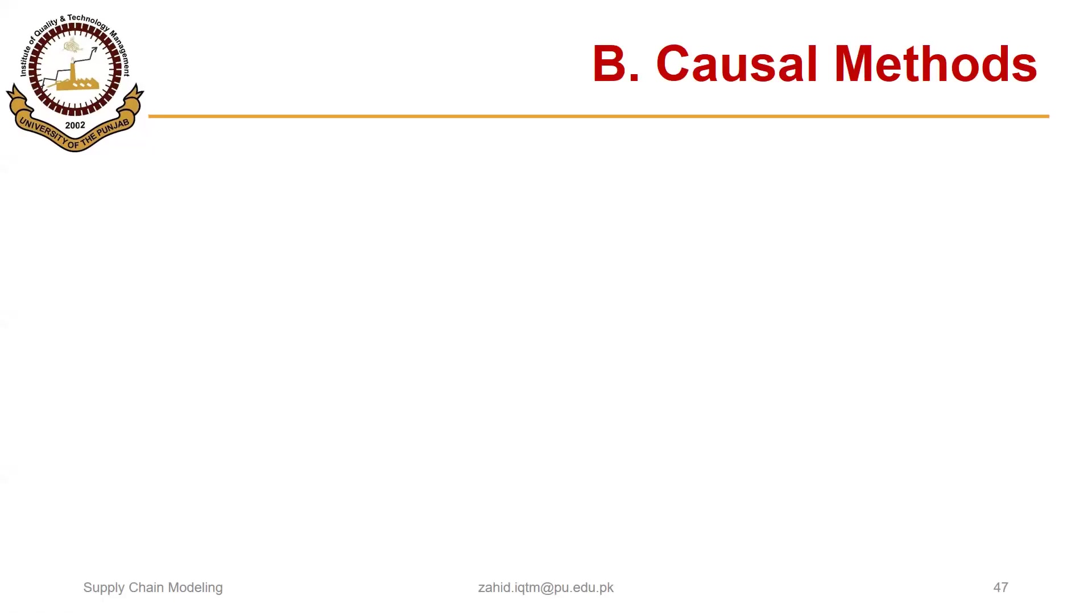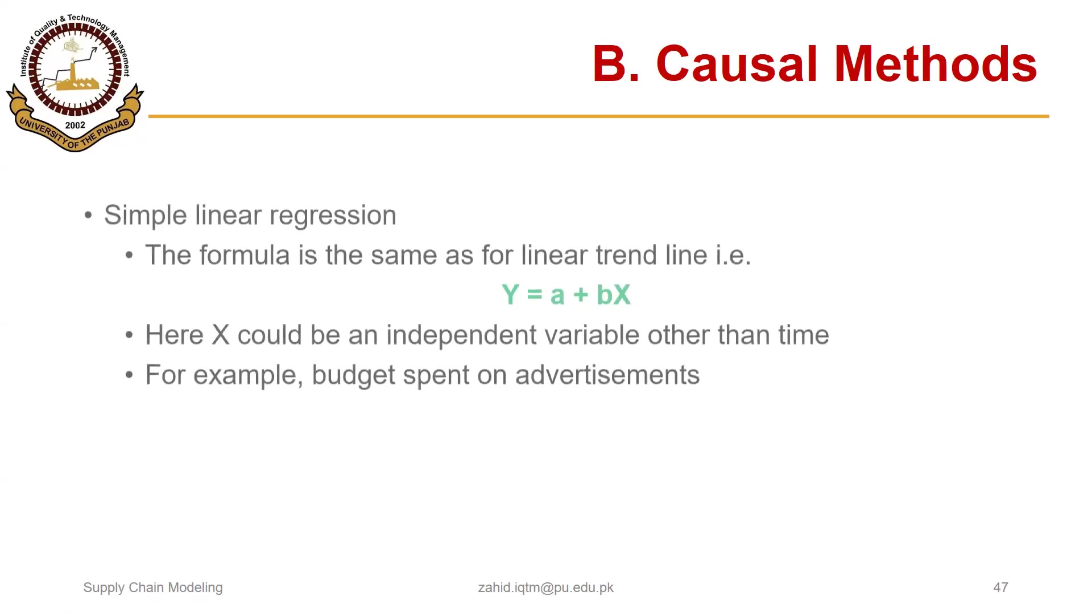In previous series of segments, we discussed a number of time series methods of forecasting. We discussed live forecasting, simple moving average, weighted moving average, simple exponential smoothing, trend-adjusted exponential smoothing, linear trend line, and seasonally adjusted forecasting. Here we are going to discuss causal methods or associative methods of forecasting.